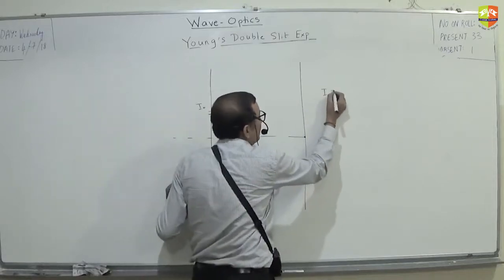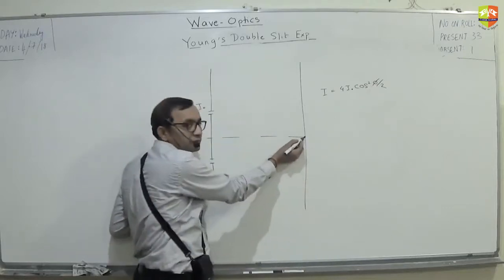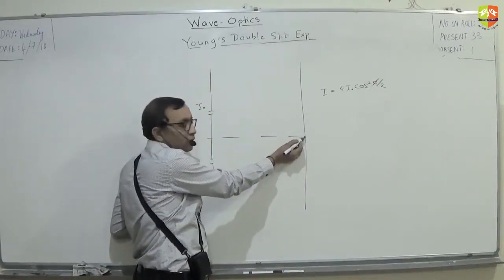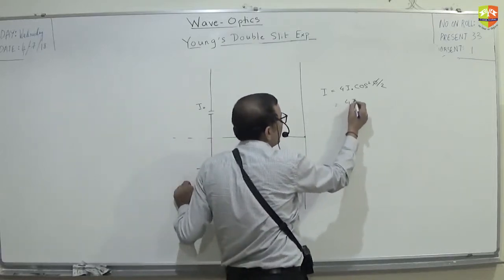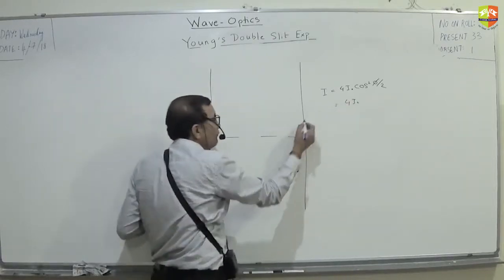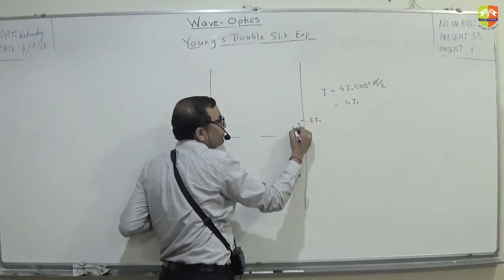At center. Intensity formula is what? 4i0 cos square phi by 2. What is phi over here? What is the phase difference over here? Zero. This is 4i0. This is 4i0. Ok.